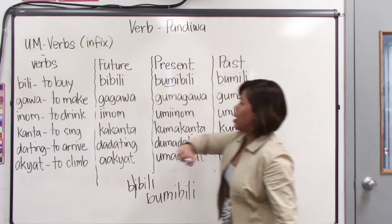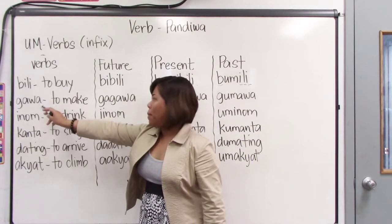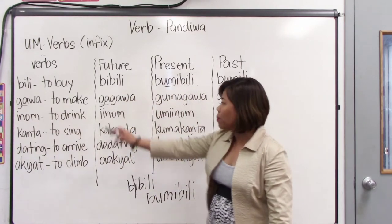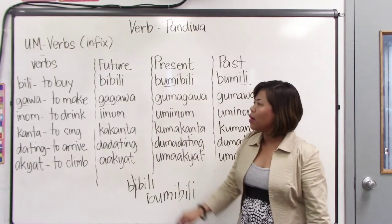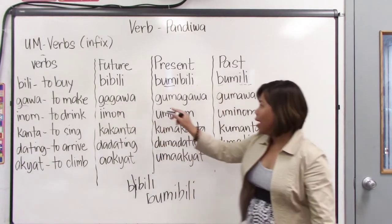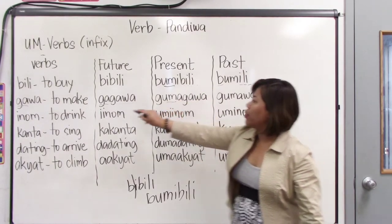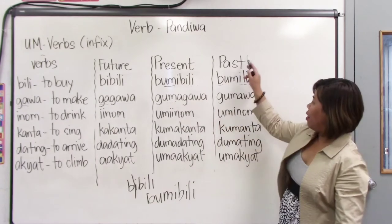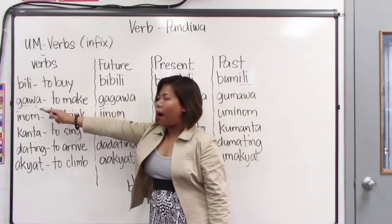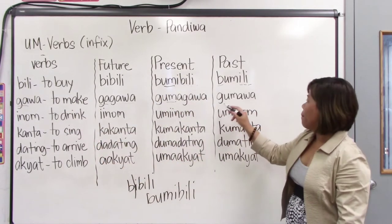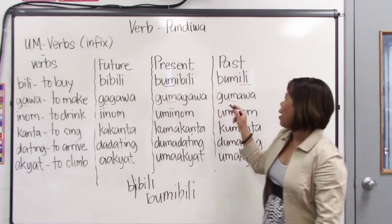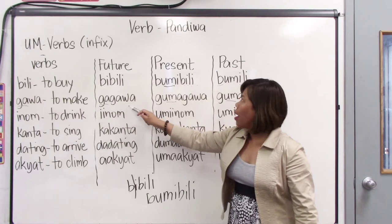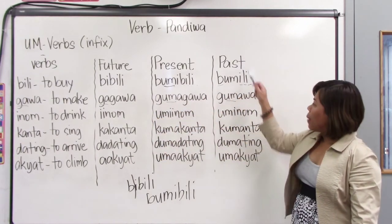Let's look at the second one: gawa. Gawa means to make, create, or do. Future: we take the first syllable ga from gawa as the prefix, add the entire verb gawa — it becomes gagawa. Present: we inserted the um after the first letter of gagawa — it became gumagawa. Past tense: we copied the entire base form gawa and inserted the um after the first letter — it became gumawa. So: base gawa, future gagawa, present gumagawa, past gumawa.